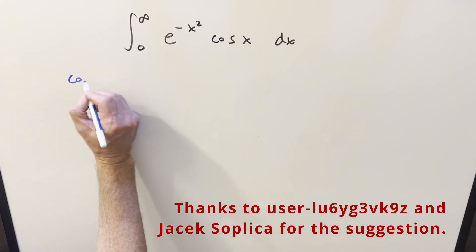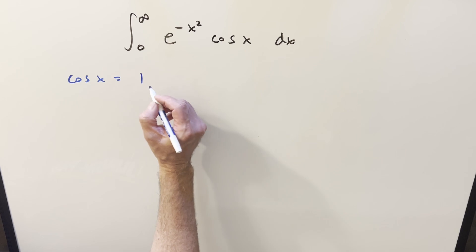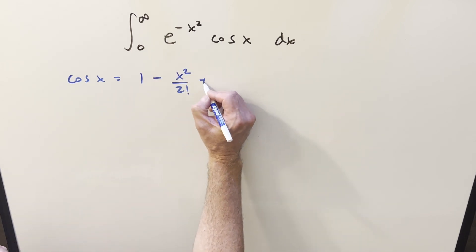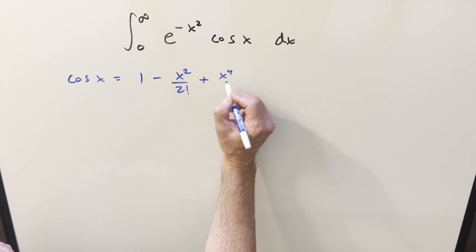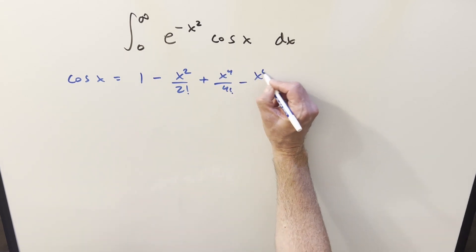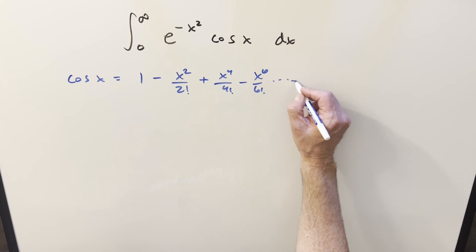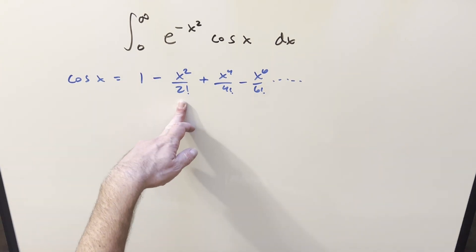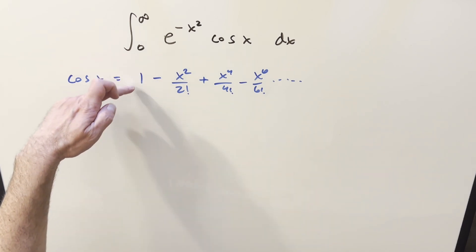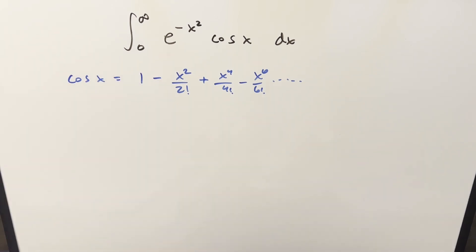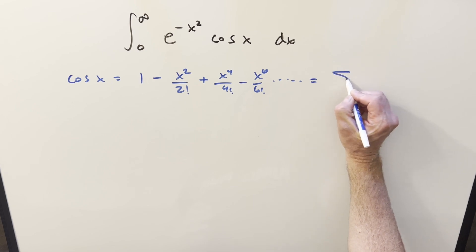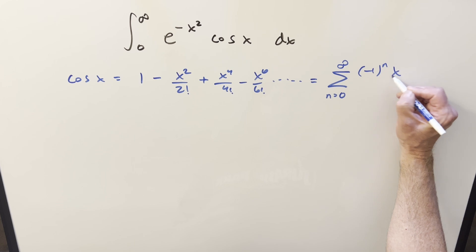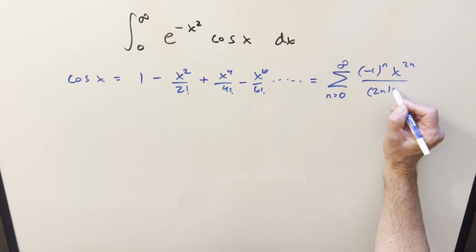What I want to use is the power series for cosine x. Writing out terms, it's going to be 1 minus x²/2! plus x⁴/4! minus x⁶/6! and on to infinity. We notice that all of the exponents are even and the denominators are even factorials. Let's get this into something more compact in sum notation: we can write this as the sum of (-1)^n · x^(2n) / (2n)!.